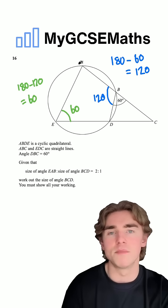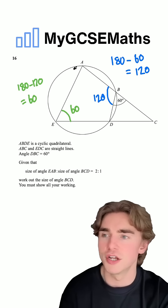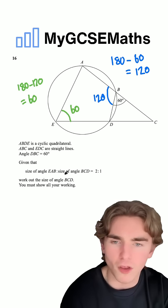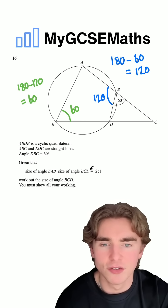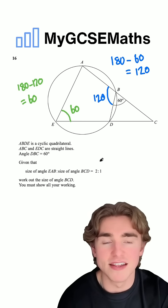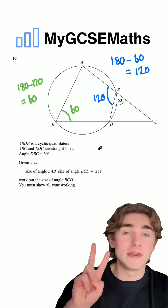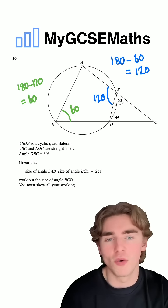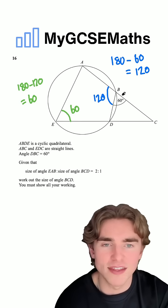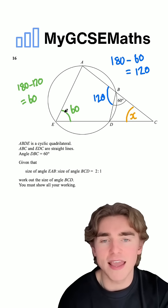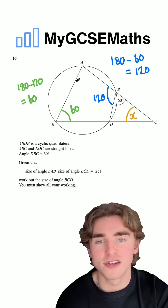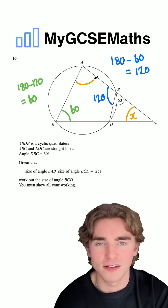How can we combine our information with the ratios? We're told that the ratio of EAB to BCD is 2 to 1, which means EAB is twice as big as BCD. So if we say angle BCD is X, then angle EAB is going to be 2X.